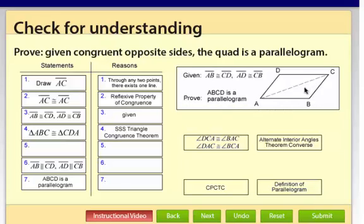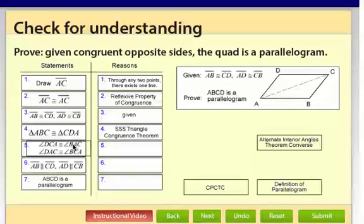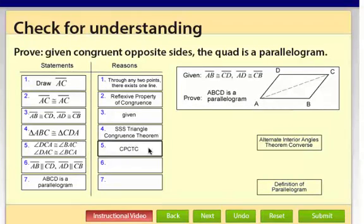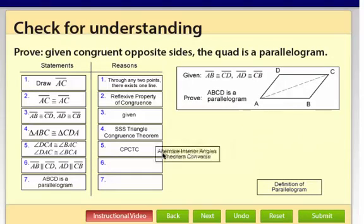This is really the similar process as the last lesson where we were proving this proof the other way around, where we had a parallelogram and we were proving that the opposite sides are congruent. So the reasoning here is corresponding parts of congruent triangles are congruent. And then, since we have these two pairs of alternate interior angles congruent, we can use alternate interior angles theorem converse to say the two segments are parallel.